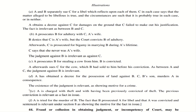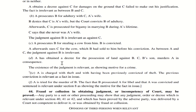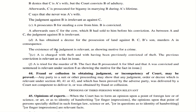Illustration D: A has obtained a decree for possession of land against B. C, who is B's son, murders A in consequence. In this case, the existence of the judgment is relevant as showing the motive for the crime. You should understand the distinction — when a judgment becomes relevant to show motive, and when it remains irrelevant.